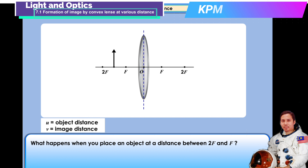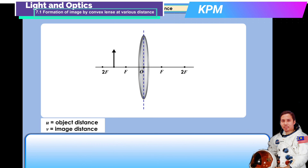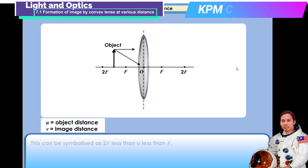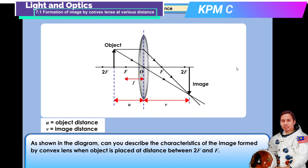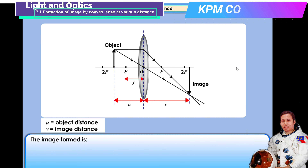What happens when you place an object at a distance between 2f and f? Let us see what happens when the rays pass through the convex lens. This can be symbolized as f < u < 2f. Can you describe the characteristics of the image formed by a convex lens when the object is placed at a distance between 2f and f? The image formed is real, inverted, and magnified.